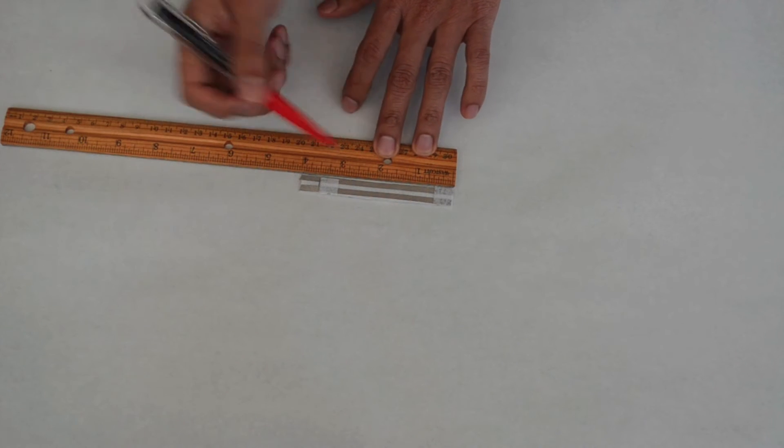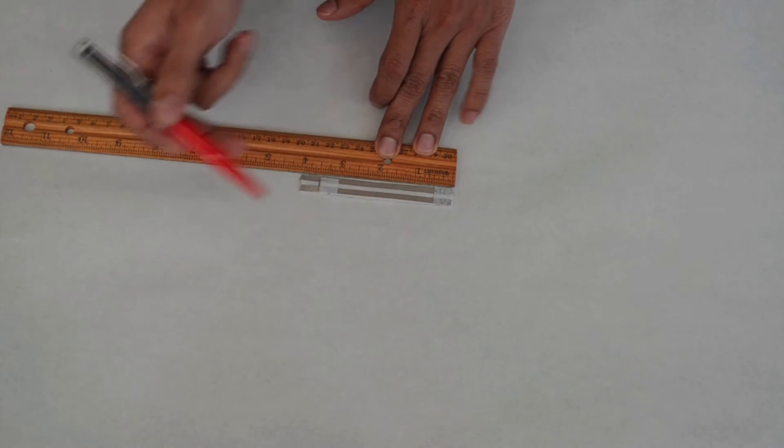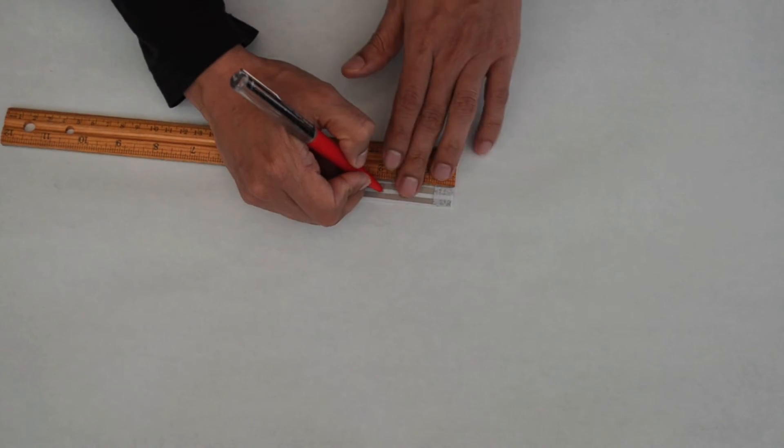The center of the base between the two pieces of fabric that were just attached should be one and three fourths of an inch. Use a ruler to measure and then mark this spot with a pencil or pen.